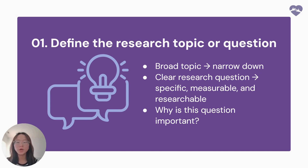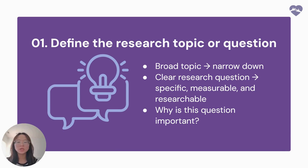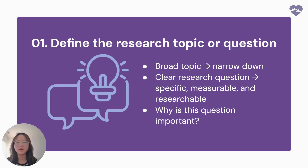Then you want to formulate a clear research question — this is the driving force behind your lit review. Your question should be specific, measurable, and researchable. For example, instead of asking something broad like 'how does technology affect education,' you can ask 'how does the use of AI-driven personalized learning tools impact student engagement in high school science classes.' The more focused your question, the easier it will be to find relevant sources. After forming your question, make sure you can justify your choice by asking yourself why it's important and whether it addresses a gap in current research. By clearly defining and justifying your research topic and question, you'll set a strong foundation for your literature review.